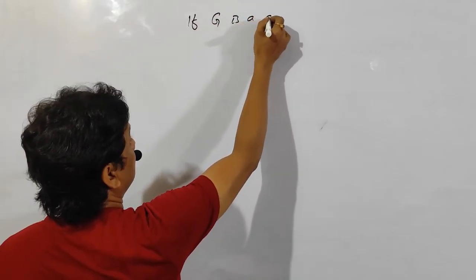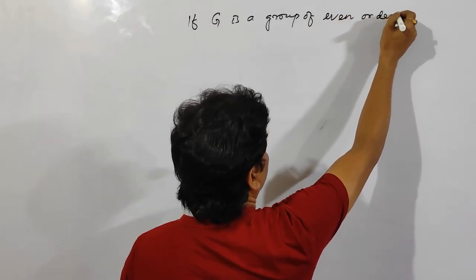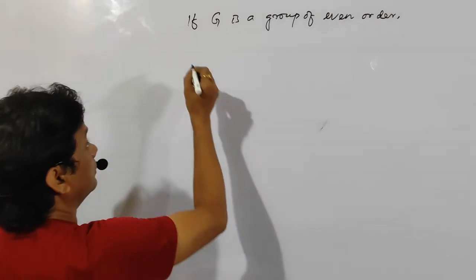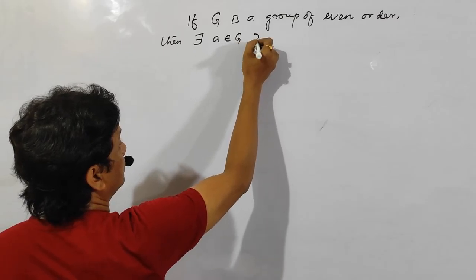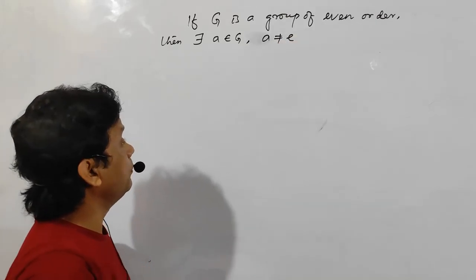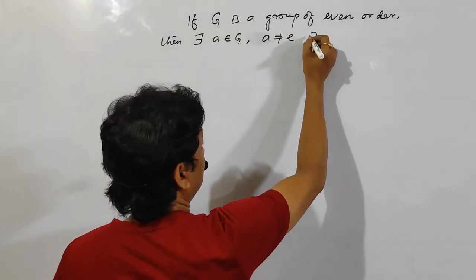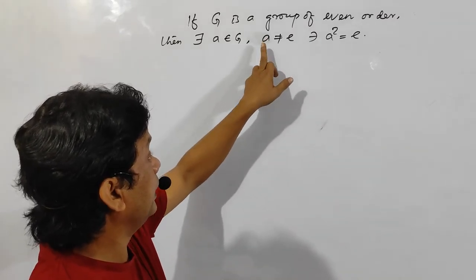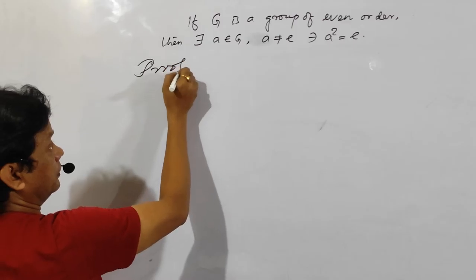If G is a group of even order, then there exists an element a belonging to G, where a is not equal to e, such that a squared equals e. You have to prove this: there exists an element a, other than the identity element e, such that a squared equals e.